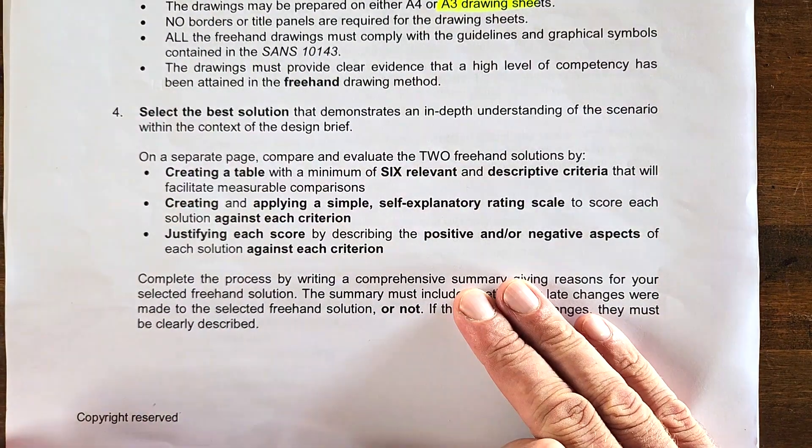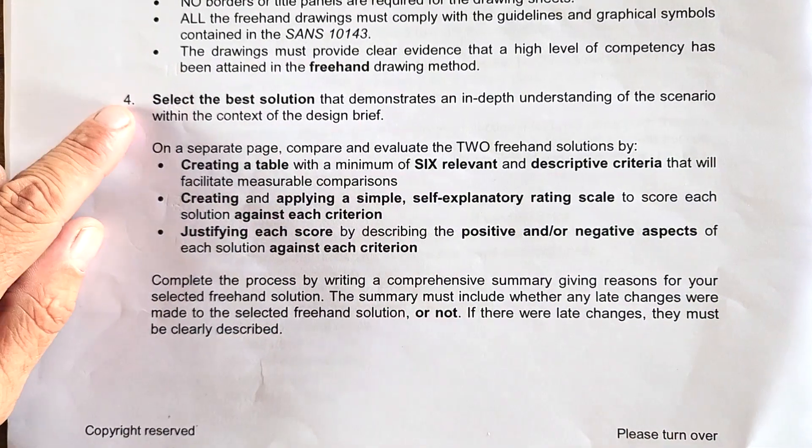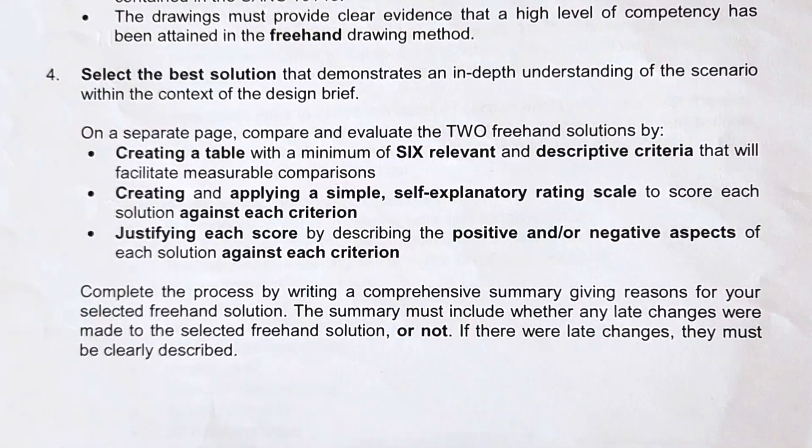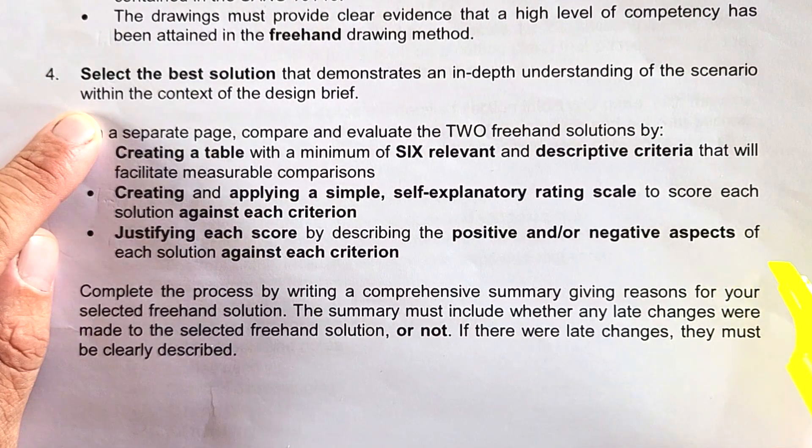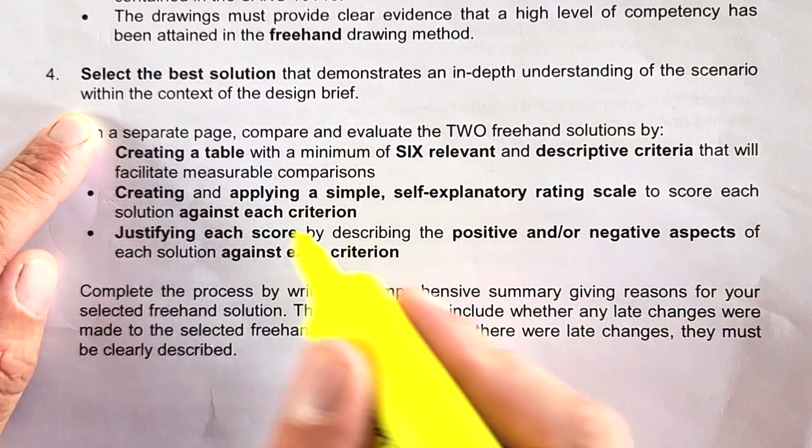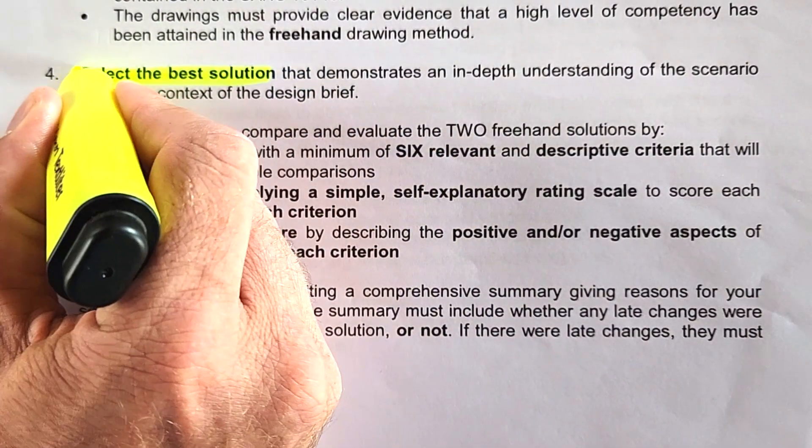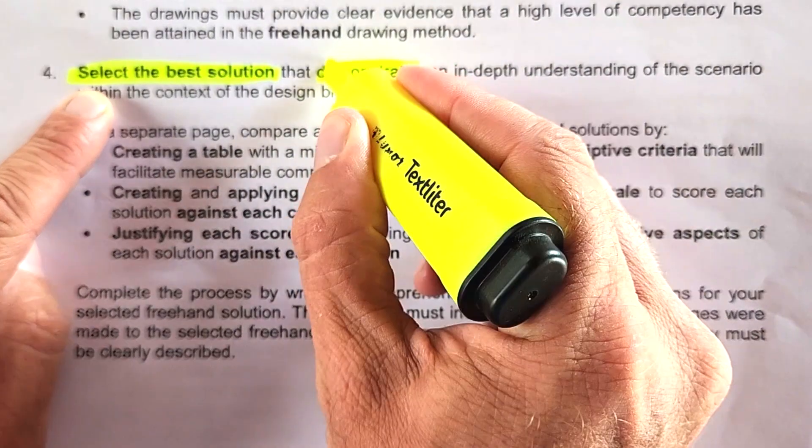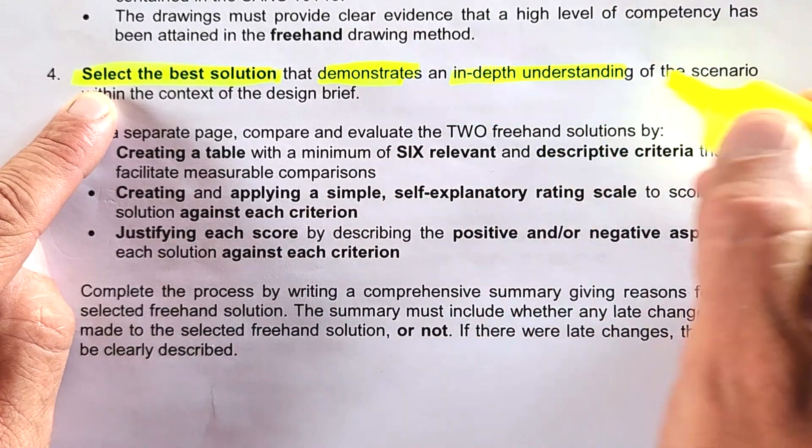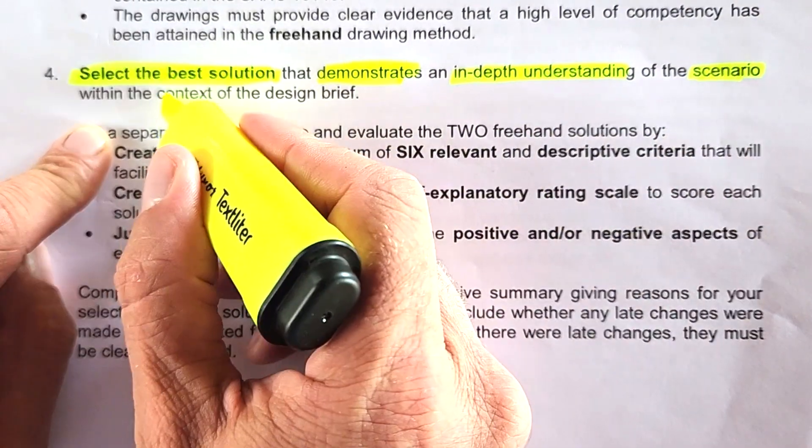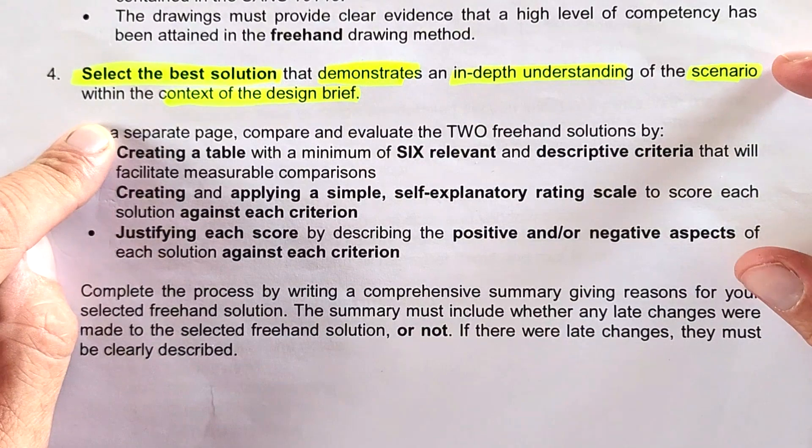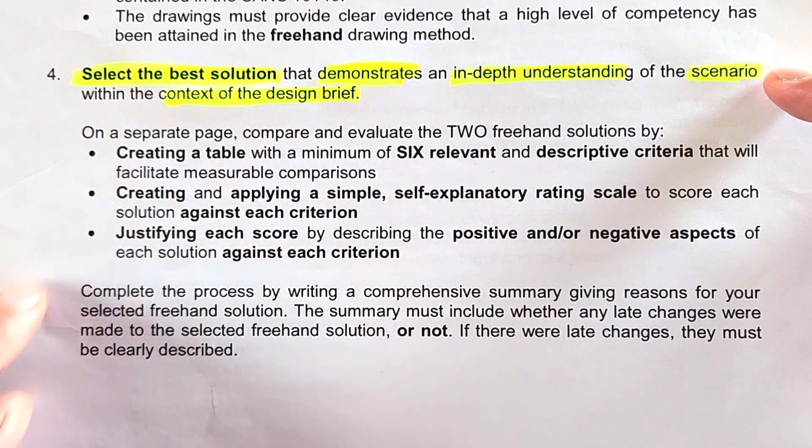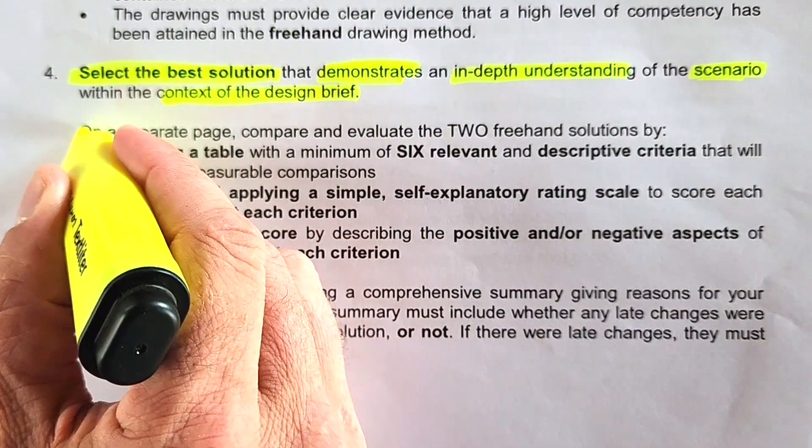We have to go back to our PAT document on page 13. Number four speaks about selecting the best solution that demonstrates an in-depth understanding of the scenario within the context of the design brief. The purpose of this video is to help you understand how this looks in your PAT task and how to select the best solution. This must be done on a separate page, A3 landscape orientation.